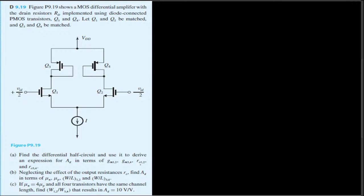We are going to do that. To derive the differential half circuit, we cut the circuit in half and replace the PMOS with a resistance we can call RD'. We connect the top rail to ground, and the output will be negative VOD over 2.